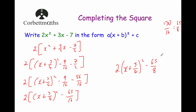Just checking to see if 65 over 8 can be simplified: the factors of 8 are 1, 2, 4, and 8, and 65 doesn't have any of those factors, so that's it. We've written 2x² + 3x − 7 in the form a(x + b)² + c. To summarise: if you need to complete the square on an expression where the x squared coefficient isn't 1, factorize by taking out that number first, then do completing the square, and finally multiply back by the number you took out.